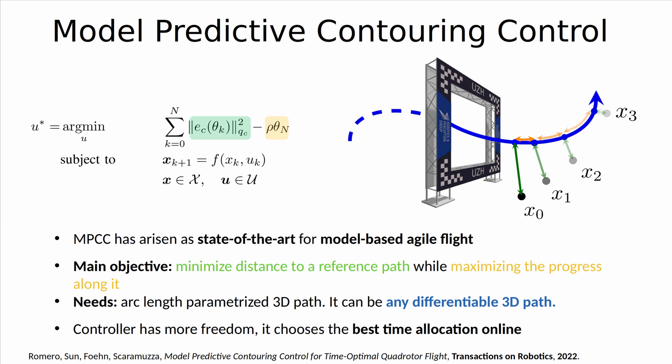Within the scope of optimal control approaches for drone racing, model predictive contouring control has recently emerged as the state of the art. In contrast to traditional model predictive control strategy, where the distance to a reference trajectory is minimized, we change the paradigm and use model predictive contouring control, which maximizes the progress along a reference path while minimizing the distance to it.